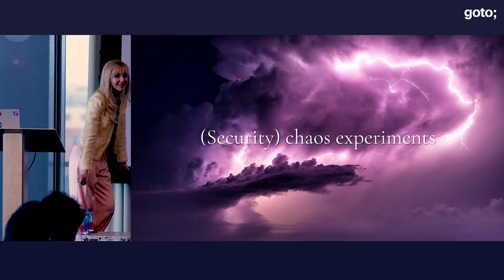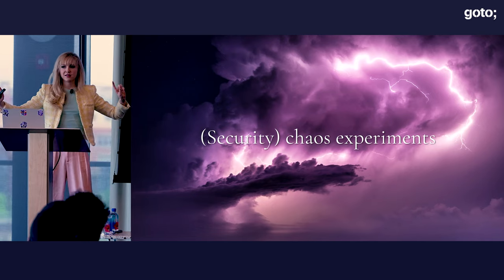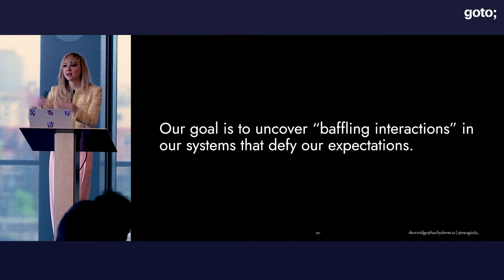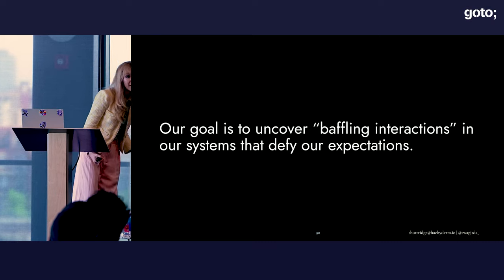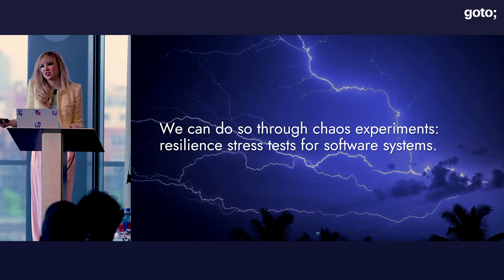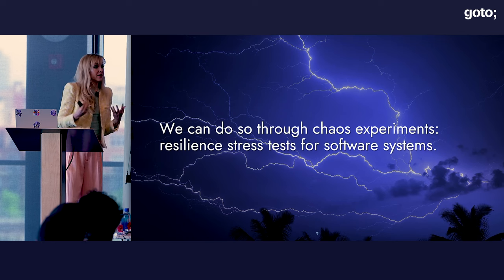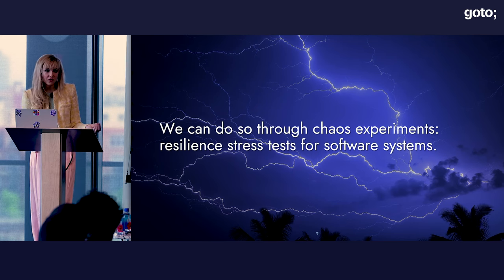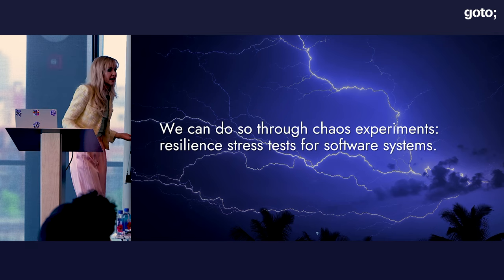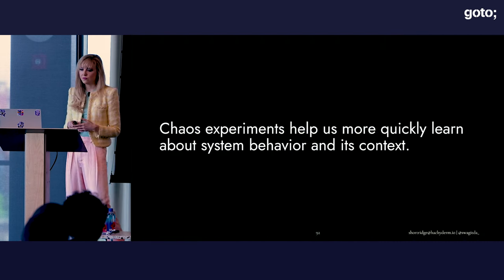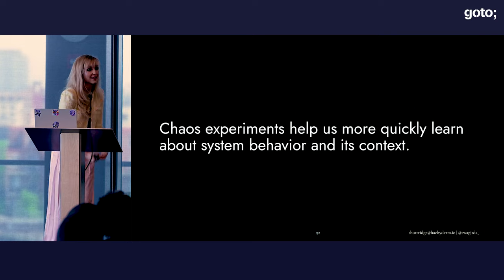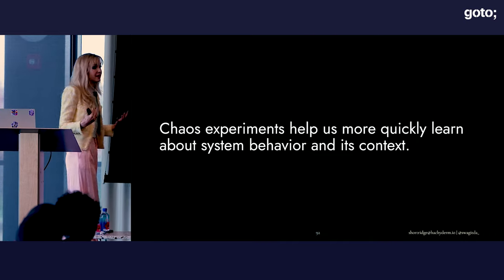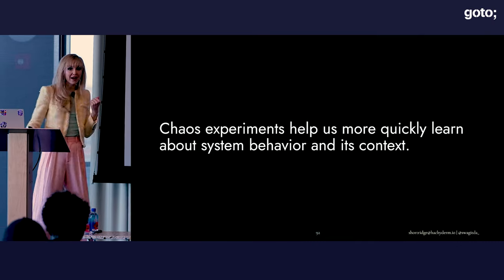So how can we test even better with chaos experimentation? Our goal is uncovering those baffling interactions — all those surprises that happen in our systems — by revealing the way the world actually works and how it differs from how we expect it to exist. We can do so through chaos experiments, which are resilience stress tests for software systems. Chaos experiments simulate adverse scenarios to see how a socio-technical system behaves end-to-end in response to those conditions. The adverse scenario can be technical, like machines dying, or socio, like an incident runbook not being available. Good engineers designing for evolving contexts need to continuously learn about system context, and adopting experimental capability allows us to do so — it's a really important way to keep up with our ever-evolving systems.